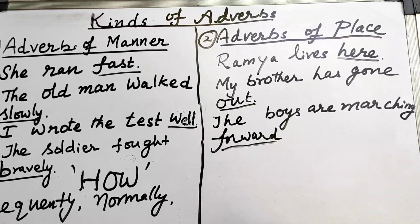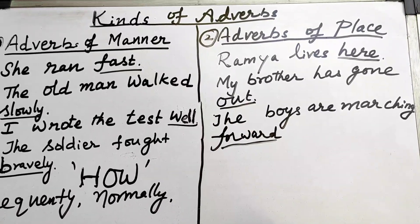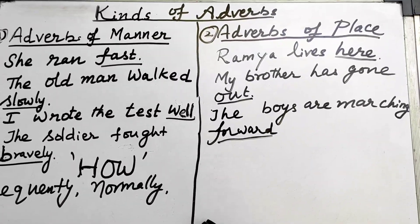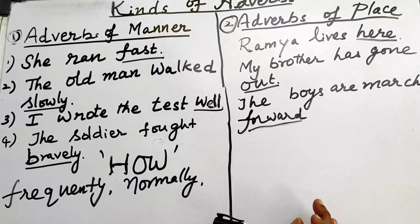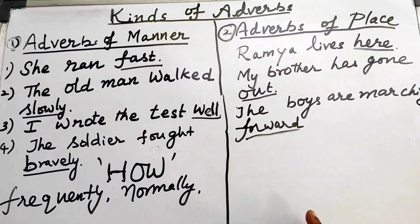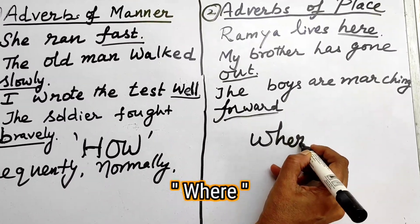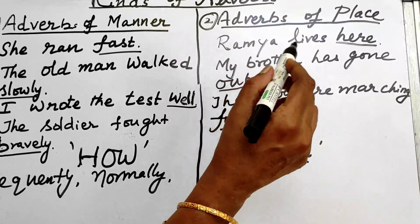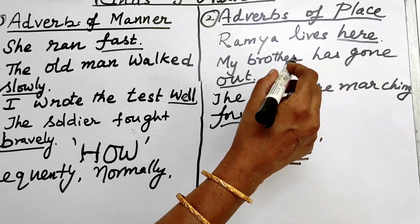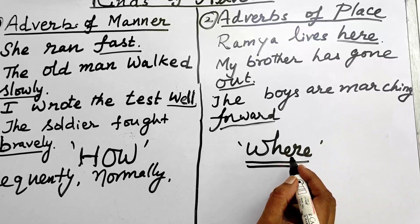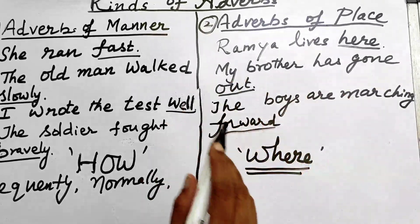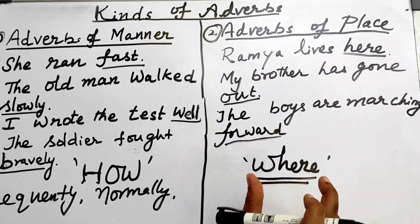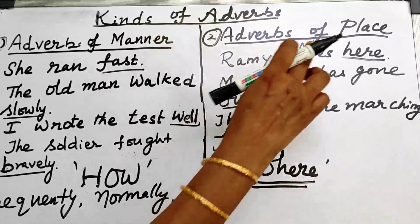The adverb of place gives the answer for the question 'where.' Where does Ramya live? Ramya lives here. Where has the brother gone? The brother has gone out. Where are the boys marching? The boys are marching forward. So any word which gives the answer for the question 'where' is called an adverb of place.